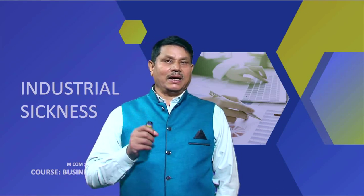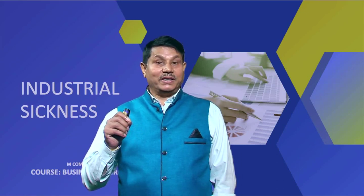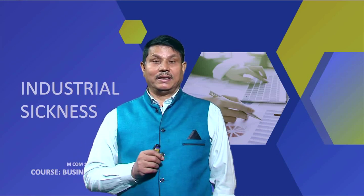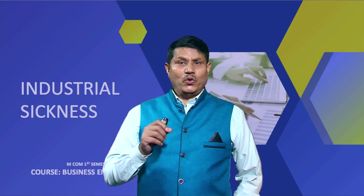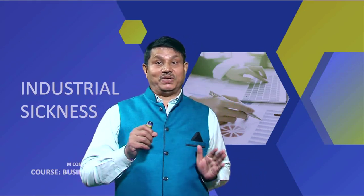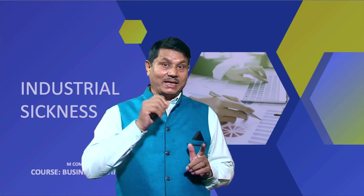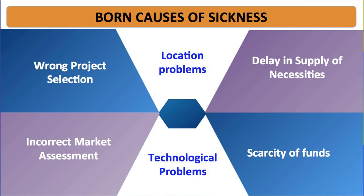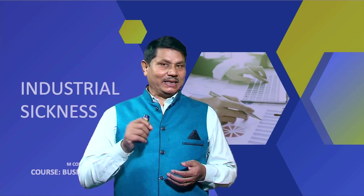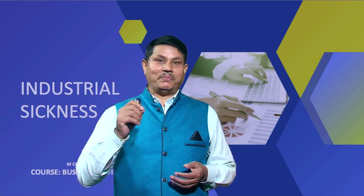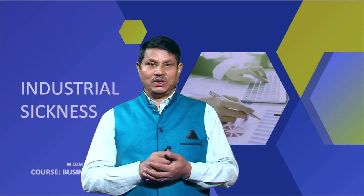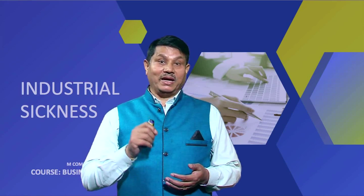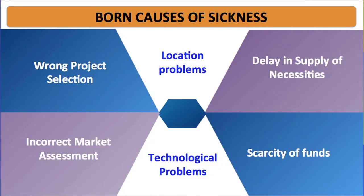Both internal and external causes of industrial sickness may be further divided into born and achieved categories. Born causes are created at the very beginning of the establishment of the firm, while achieved causes are earned by the firm during its operation. The first born cause of sickness is wrong project selection. If an industry makes a mistake in selecting the project, it may lead to sickness later on. Lack of experience on the part of promoters and faulty project planning may give birth to sick units.